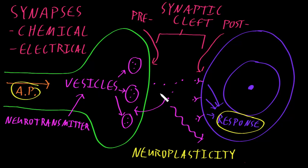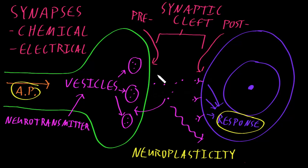The opposite is also true of synapses that are used infrequently — a smaller response may occur each time an action potential reaches the axon terminal. Neuroplasticity may also involve changes beyond individual synapses; the actual number of synapses between neurons and their target cells may change. For example, more synapses may develop between frequently used axons and dendrites by sprouting of more axon terminals or more dendritic branches. This phenomenon is often referred to with the phrase that neurons that fire together wire together, so that pathways used a lot develop stronger connections and become more efficient at moving information.